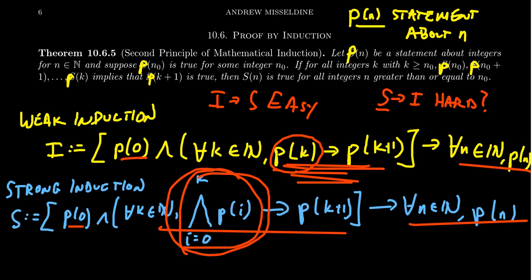Sure enough, strong induction implies weak induction, but also weak induction implies strong induction. From a logical perspective, these two principles of mathematical induction are logically equivalent to each other. The domino effect is the same in both of them, so anything you could prove using induction, you can also prove using strong induction and vice versa.